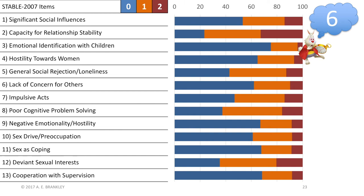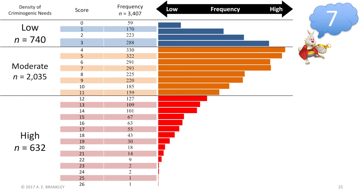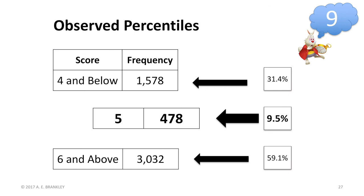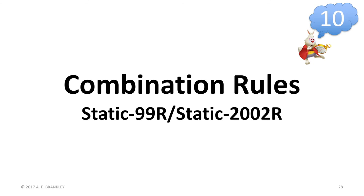We updated the item frequency data, and if you check out the full video, we used colorful slides to describe the frequencies. We also updated total score data, and updated the percentile information, recommending the use of percentile rank as defined by midpoint average in reports. The full video also gives you a breakdown of how percentiles are calculated.